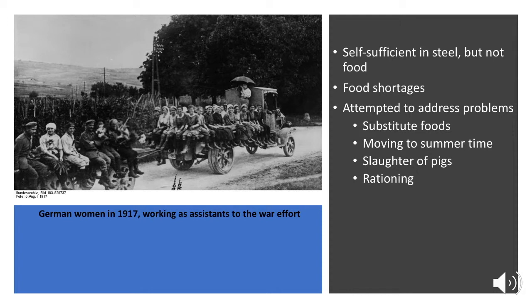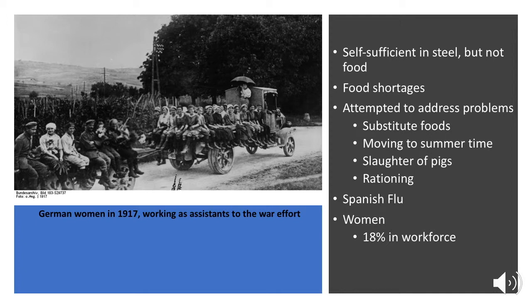The Spanish flu outbreak in the winter of 1918 was widespread to every country and among soldiers. But in Germany, because of the malnourishment of the people and the poor conditions domestically, there were a large number of deaths. For women, a huge portion of the population did enter the workforce — 18% of the population was actually in the military — so women had to come in and fill those roles. Food shortages and flu led to a rapid increase in death rates for women in 1917 and 1918.